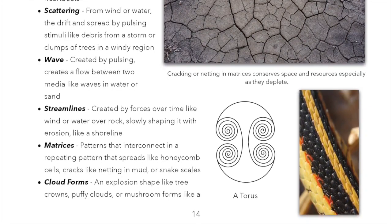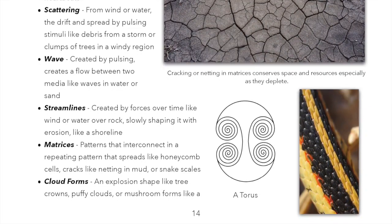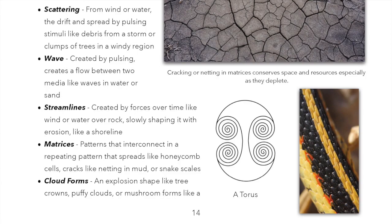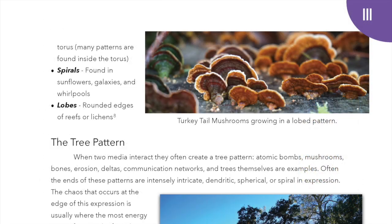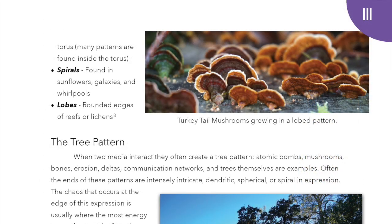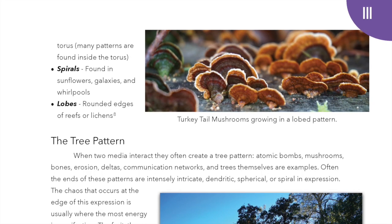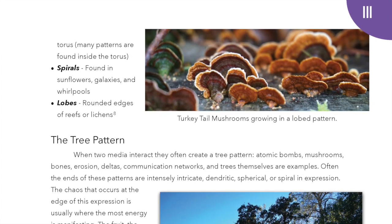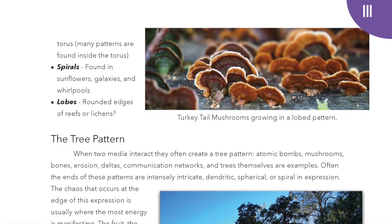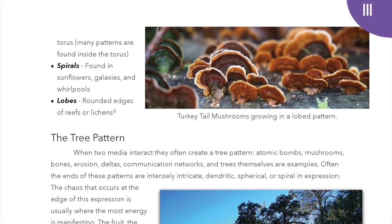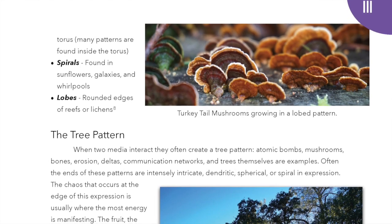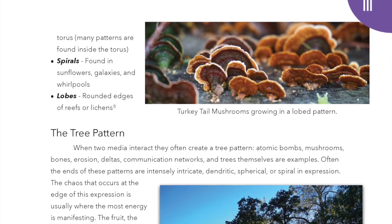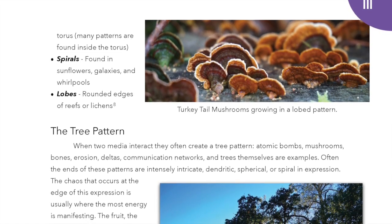Cloud forms: an explosion shape like tree crowns, puffy clouds, or mushroom forms like a torus. Many patterns are found inside the torus. Spirals: found in sunflowers, galaxies, and whirlpools. Lobes: rounded edges of reefs or lichens.